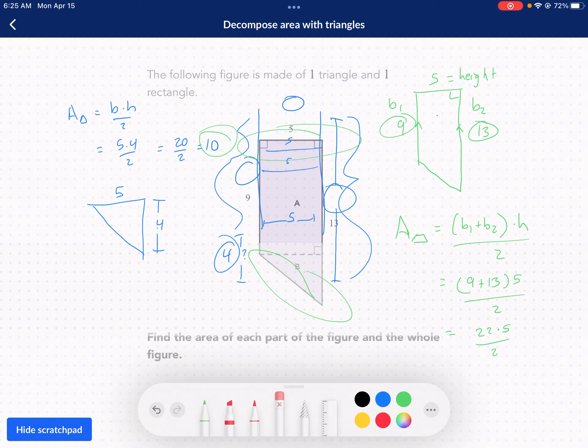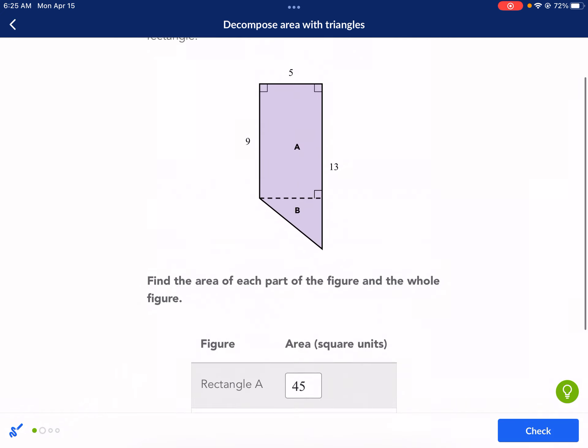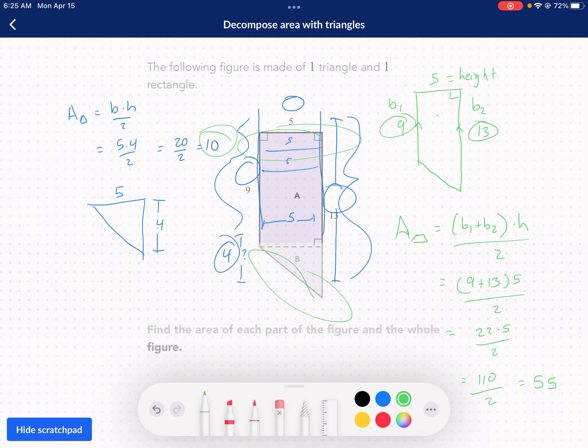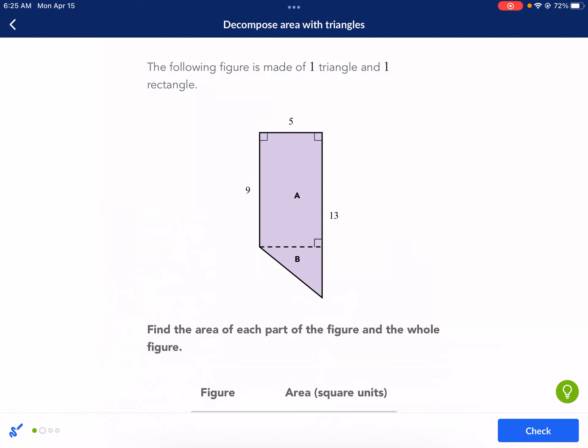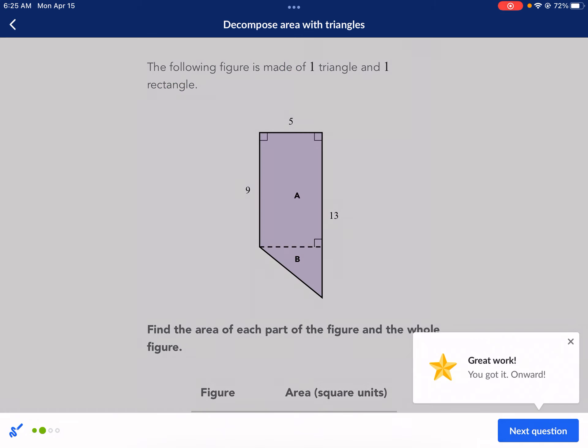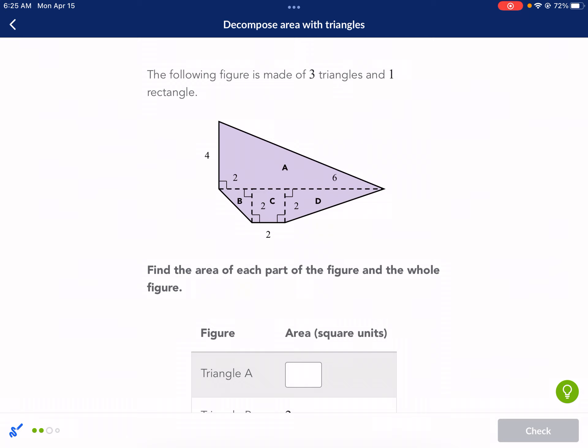And then we'd get, that is 110. 22 times five is 110. I divide by two, and I get 55, which is the same thing I got right here. So, if you're working on another problem, and you have a trapezoid, you can just go ahead and use that formula right there, and it works for you. And I'm just glad I could show you how it works.